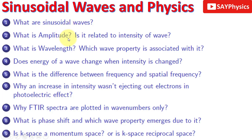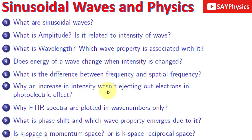What is the amplitude and is it related to the intensity of a wave? What is wavelength and which property is it associated with? We will discuss whether the energy of a wave changes when we change the intensity of a wave. And what is the difference between frequency and spatial frequency? Time frequency depends on time, and spatial frequency is the frequency depending on space. Then we will talk about the photoelectric effect — why electrons were not ejecting out of the metal surface when we increased the intensity. And we will discuss why FTIR spectra are plotted in wave numbers on the x-axis.